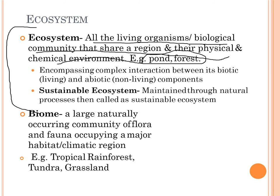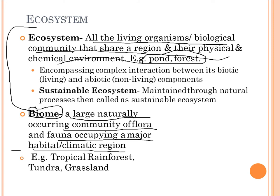A biome is a large, naturally occurring community of flora and fauna occupying a major habitat or climatic region — for example, a tropical rainforest, tundra, island, or grassland forest. A biome consists of all plants and animals occupying a particular region.